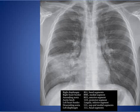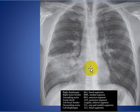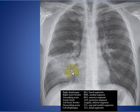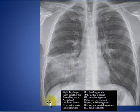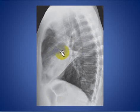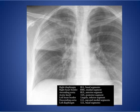Here is an example chest X-ray where we see an opacity with the same density as the heart, and it is obliterating the right cardiac border. According to the silhouette sign, obliteration of the right cardiac border means the lesion should be located anteriorly, in the middle lobe medial segment. On the lateral view of the same patient, you can see the minor fissure and the major fissure, confirming that the opacity is located in the middle lobe.